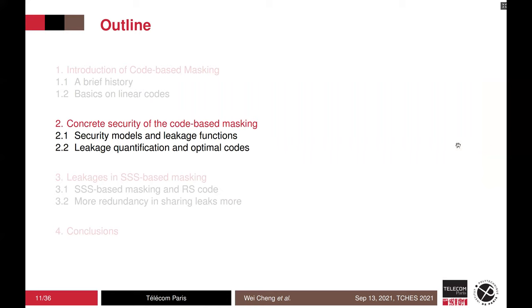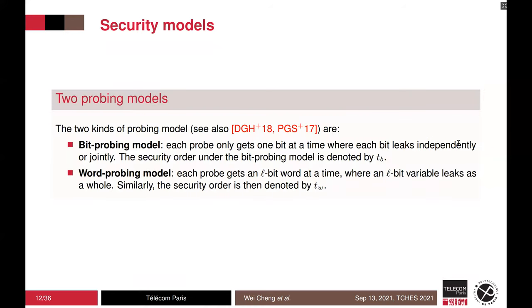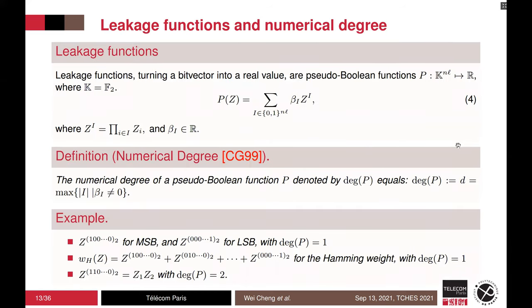Next, we show how to measure the leakage in code-based masking. In this work, we consider two probing models. In the bit probing model, each probe only gets one bit of information, while in the word probing model, each probe gets a word of information. The corresponding security orders are t_b and t_w, respectively. In side-channel analysis, the leakage function turns a bit vector into a real value, which are denoted as the pseudo-Boolean function p. Then the numerical degree is defined as the maximum number of coordinates of β, which is the coefficient of z^i in leakage function p.